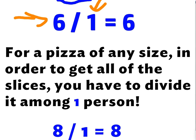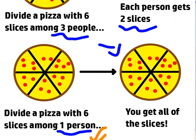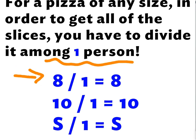For a pizza of any size, in order to get all the slices, you have to divide it among one person. So let's say I had eight slices. Well, if you divide among two people, each person will get four slices. You've got to only give it to yourself, right? Ten slices, same concept. Ten divided by one is ten. And let's just suppose S represents any number of slices of pizza. You would still have to only divide that by one in order to get all the slices.